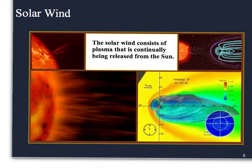And whenever you hear somebody reference the solar wind, it's this plasma that's continually being released from the sun, and you can see here how it interacts with our Earth's magnetic fields.